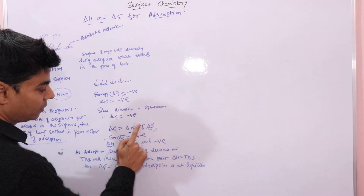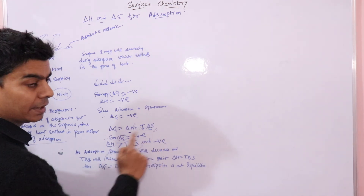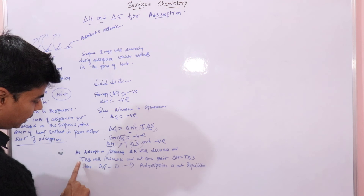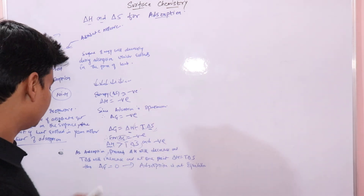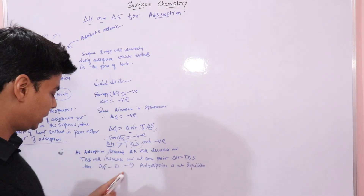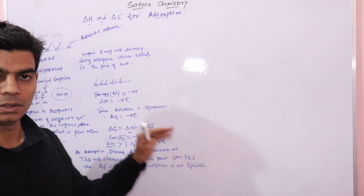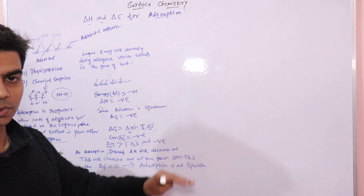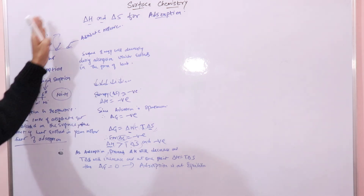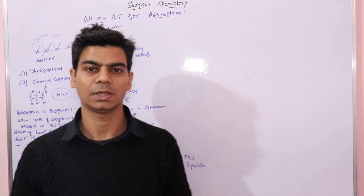For ΔG to be negative, ΔH should be greater than TΔS. As time progresses, ΔH decreases and TΔS changes until both become equal, at which point ΔG becomes zero and adsorption has attained equilibrium. At equilibrium, the rate of gas adsorption equals the rate at which gases leave the surface. This concludes the discussion of enthalpy and entropy change for adsorption.